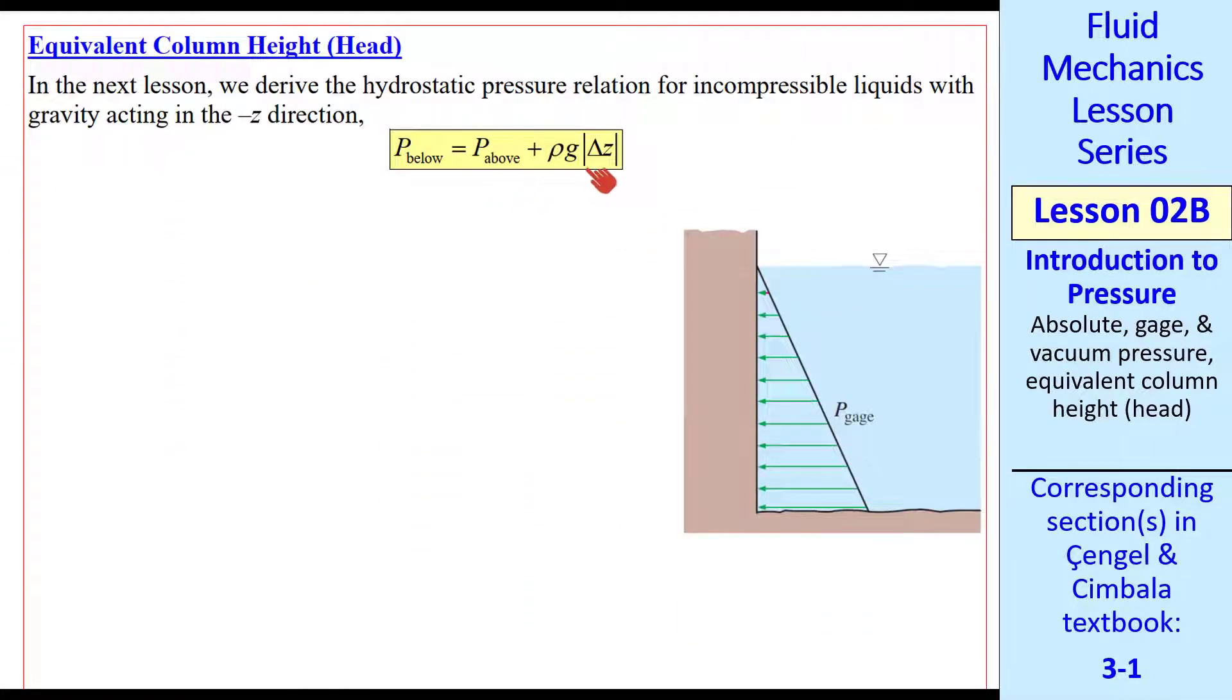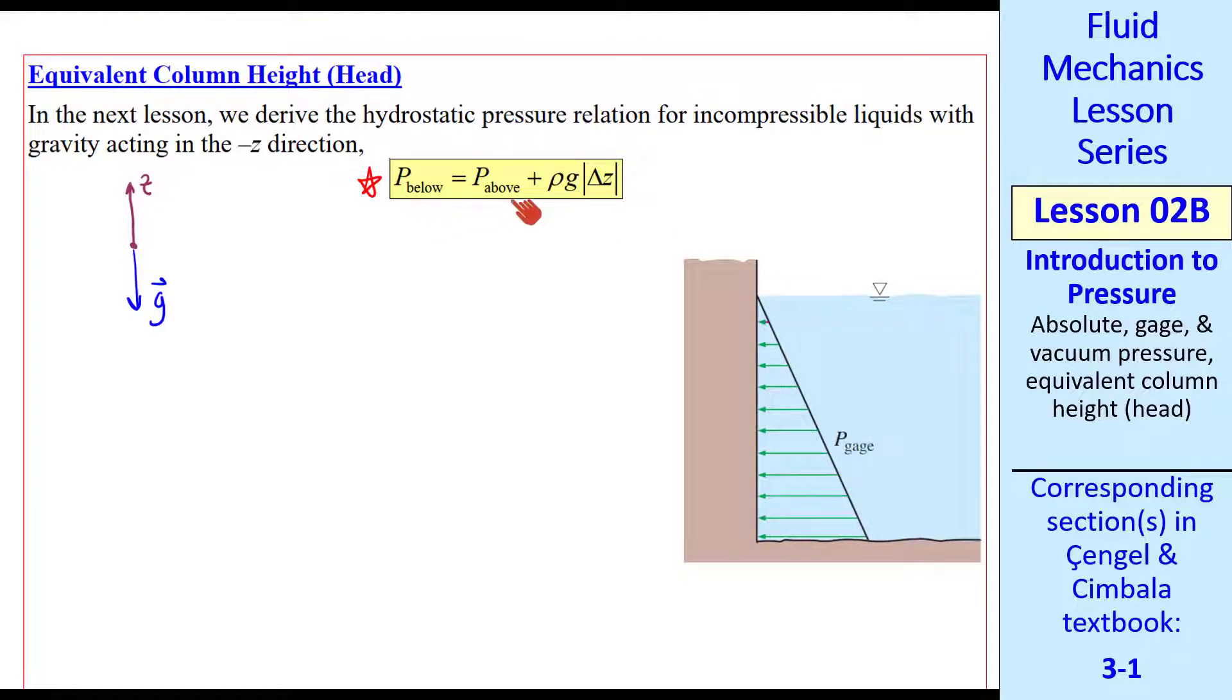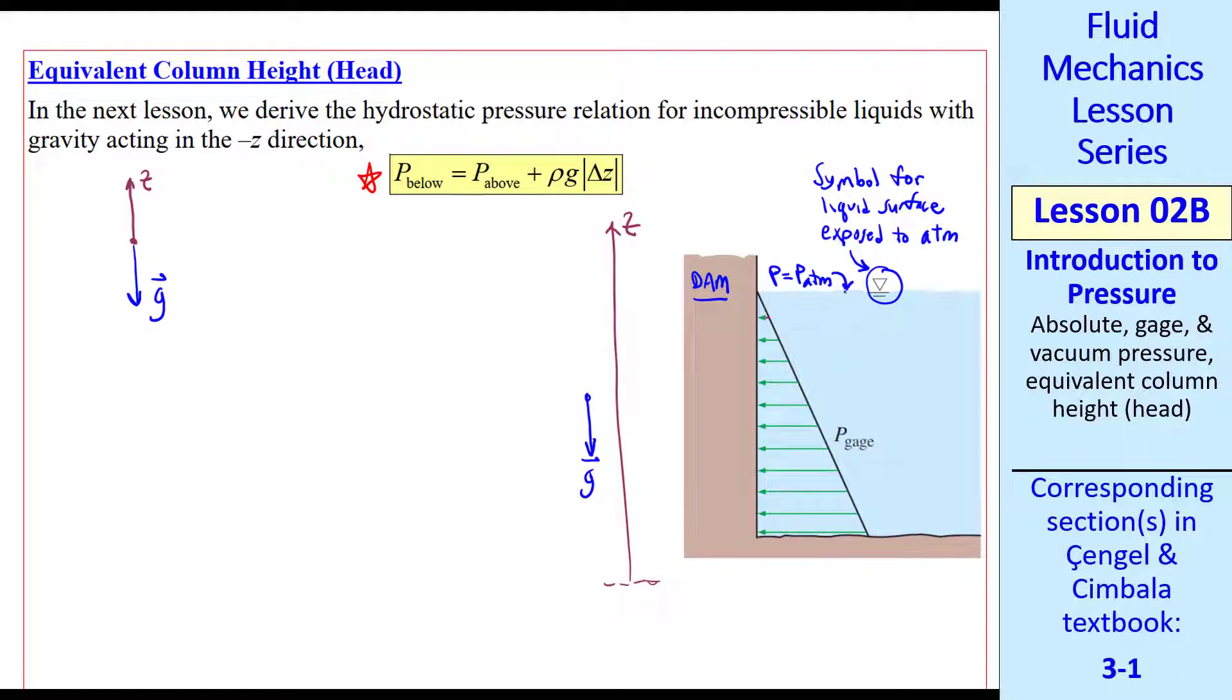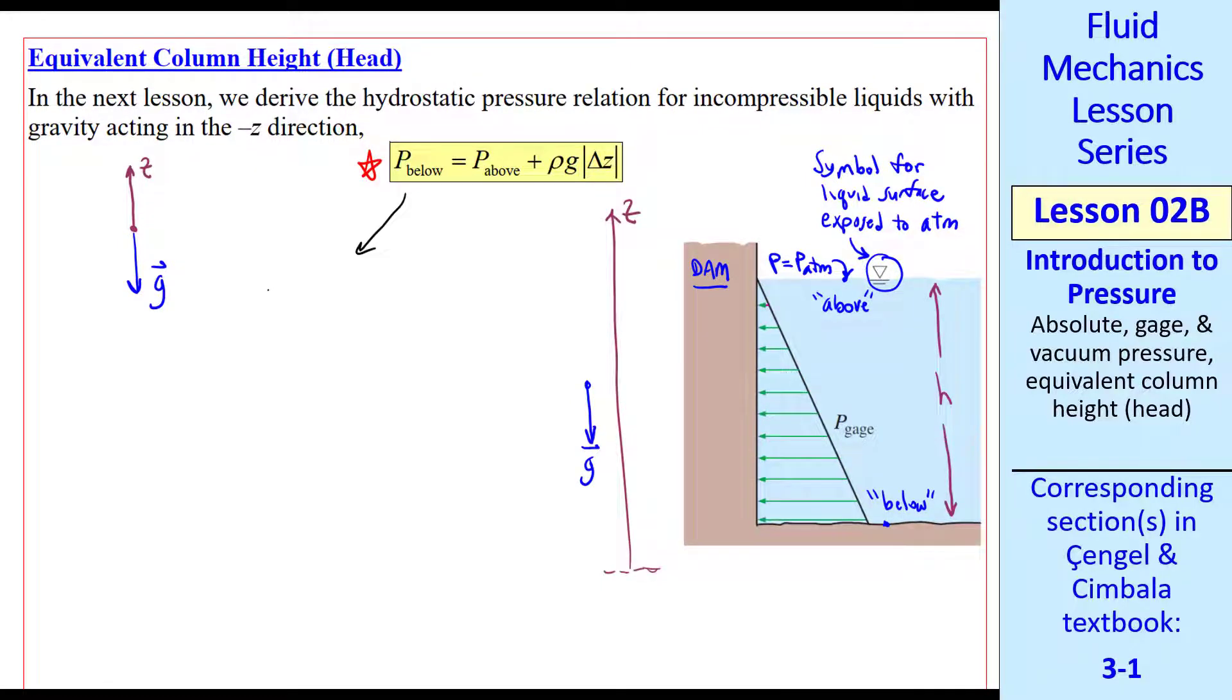I will derive this equation in the next lesson. For now, if we let Z be up and gravity vector be down, this is a simple way to express the change of pressure with elevation. P below is P above plus rho G times the absolute value of the change in height. For example, if Z is relative to some arbitrary reference frame, and G is down, we're looking at a dam holding back water. This symbol, which we'll see a lot, is the symbol for a liquid surface exposed to atmospheric pressure. So the absolute pressure at this point is P atmosphere. Since that's the high point here, we call that above. And let's take a point at the bottom of the lake as below. And if the depth of the water is H, this equation gives us P at the bottom of the lake, P below, is P atmosphere, that's P above, plus rho G times H.